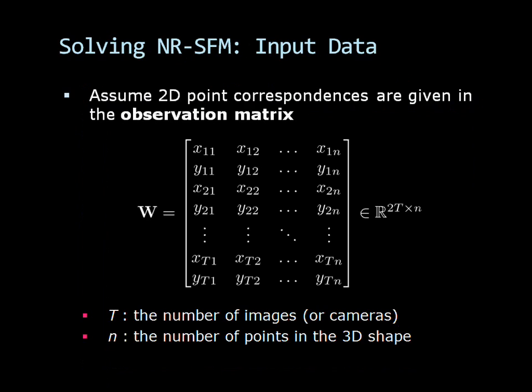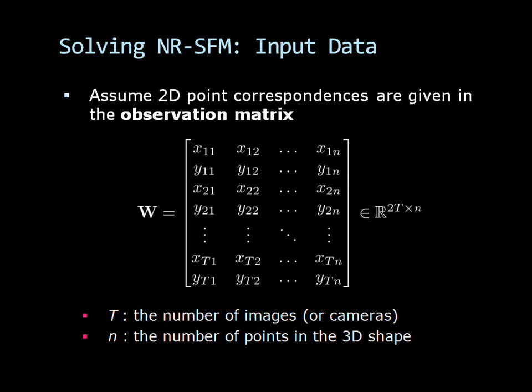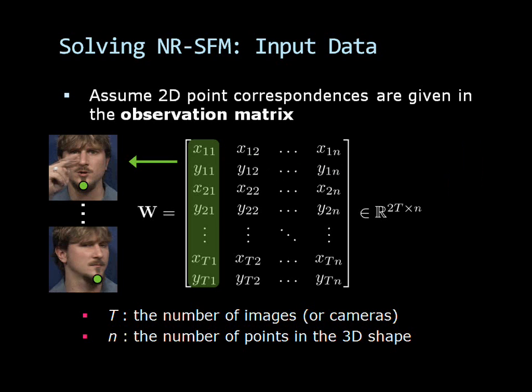We assume that tracked points are given in the observation matrix W. Each pair of rows in W has the coordinates of all object points as seen in a single image. A column of W has the coordinates of a single object point as seen in all images. Here, the number of images is denoted by T and the number of object points by N.